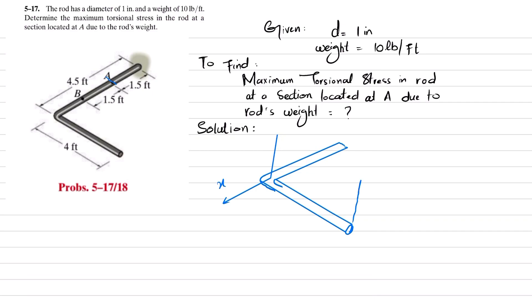This is 4 feet mentioned over here. Now due to this 4 feet length of the rod, the weight per unit foot is 10 pounds, so there will be a load.